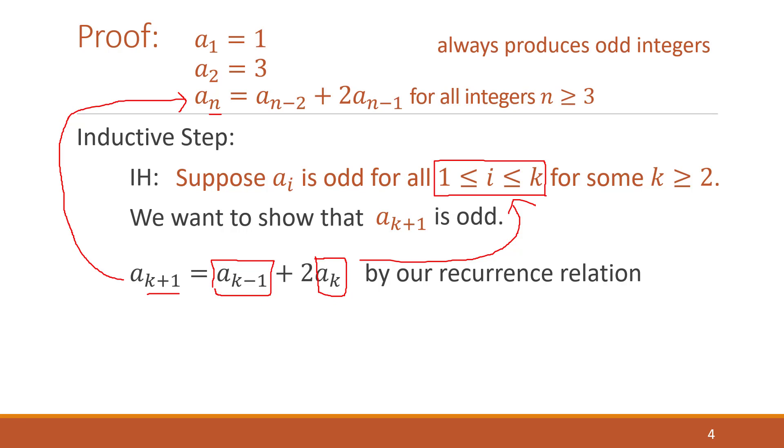So what we can use is a general form of the formula for an odd number and say that a of k minus one, well, I don't know what it is, but by the inductive hypothesis, I know that it's odd. So I'm going to say it's two times some integer plus one because that's the definition of an odd integer. And again, I don't know what a of k is, but by the inductive hypothesis, I know it's odd.